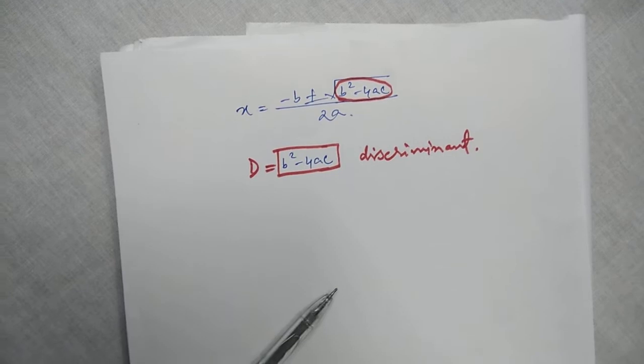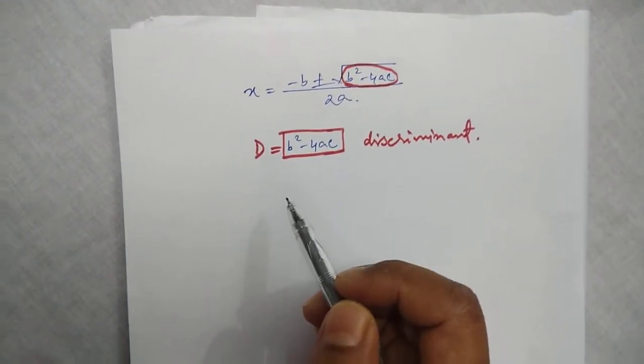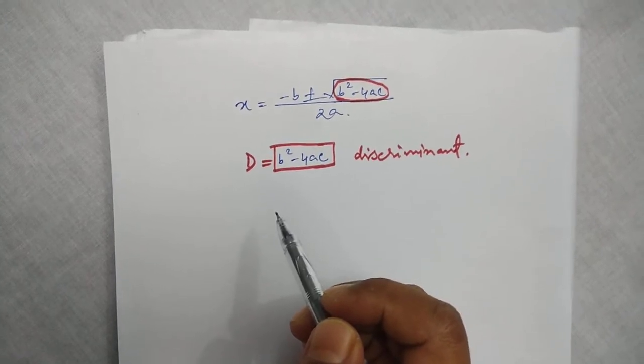With the help of this discriminant, we can tell about the nature of the roots without solving the quadratic equation.